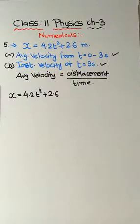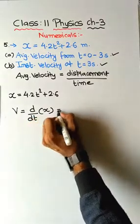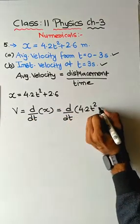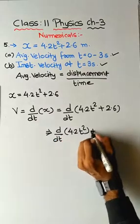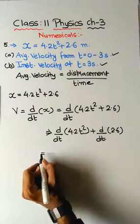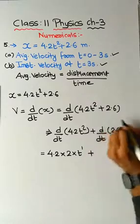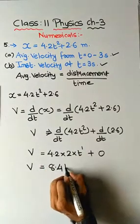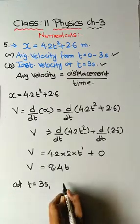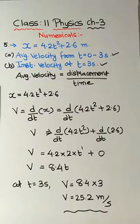For instantaneous velocity, differentiate x with respect to time: v = d/dt(4.2t² + 2.6). Splitting: d/dt(4.2t²) gives 4.2 × 2 × t = 8.4t, and d/dt(2.6) = 0. So v = 8.4t. At t = 3 seconds: v = 8.4 × 3 = 25.2 metres per second. That is the instantaneous velocity of the object at exactly 3 seconds.